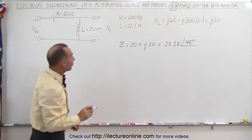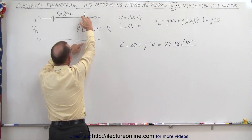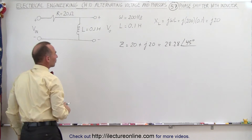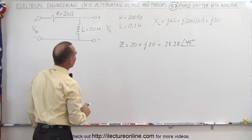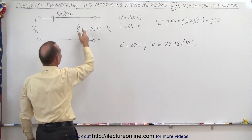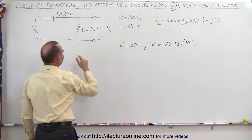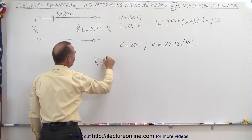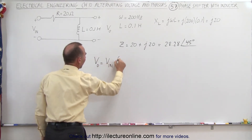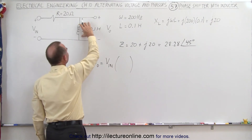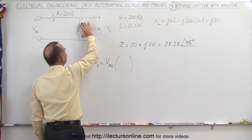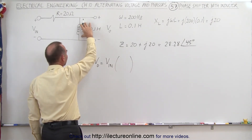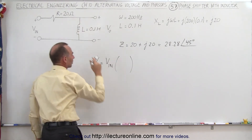So now what we want to do is see what the voltage drop is across the inductor relative to the voltage input at the beginning of the circuit. We can see that this works like a voltage divider: the output voltage is going to be equal to the input voltage times the ratio of the impedance across the inductor — basically the reactance — divided by the total impedance of the circuit.